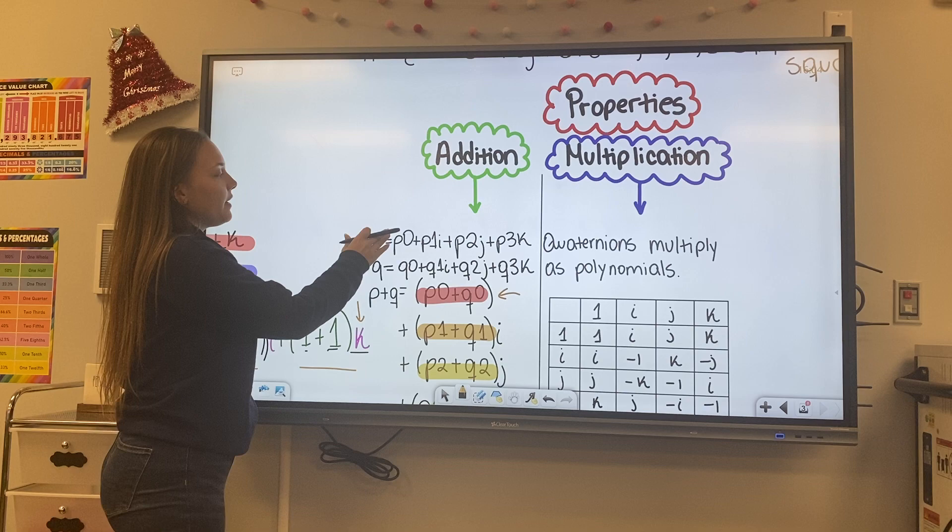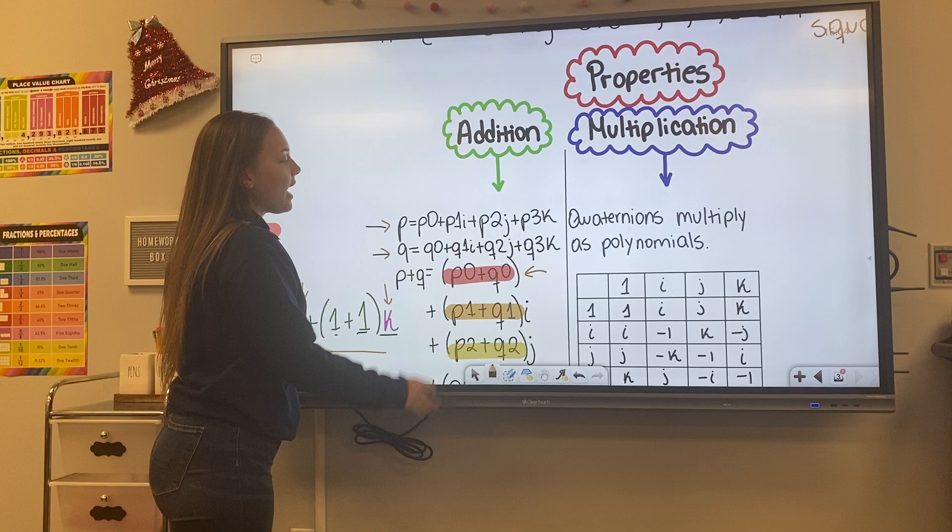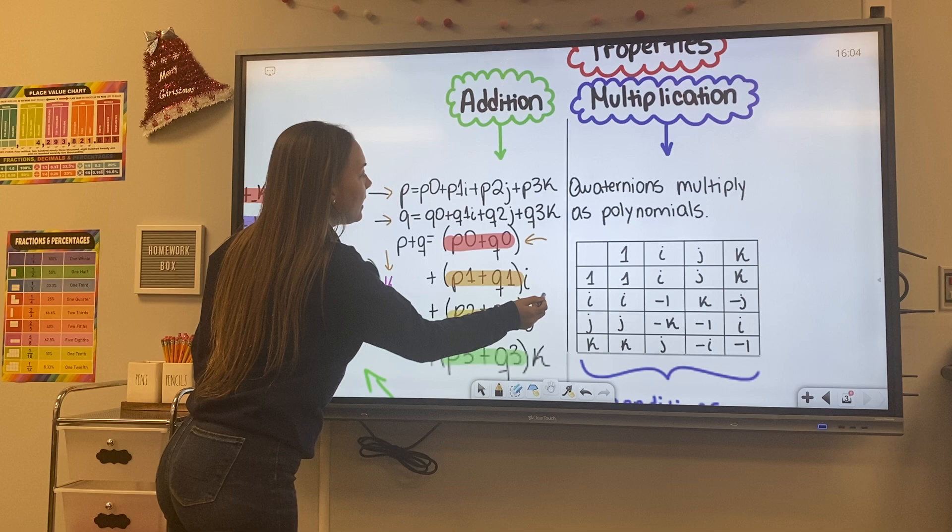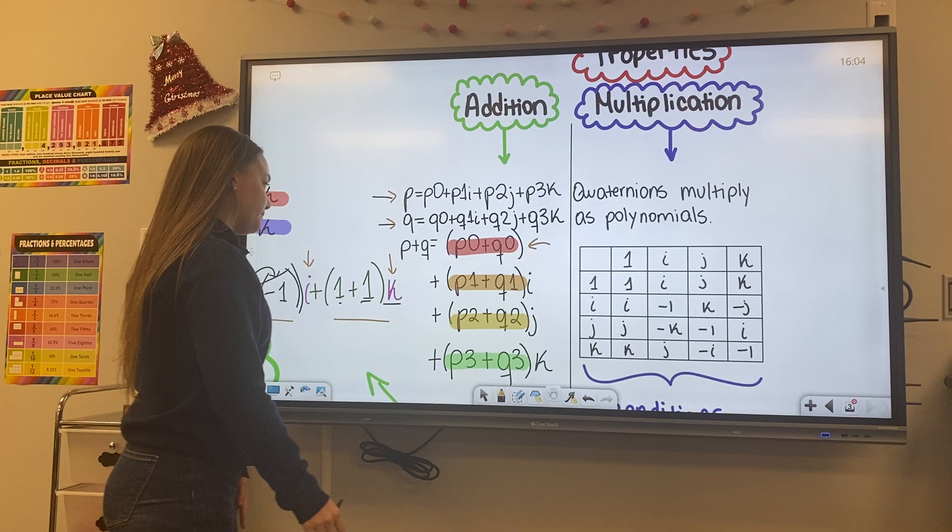So here we have P0 plus P1i plus P2j plus P3k and we have Q0 plus Q1i plus Q2j plus Q3k. So you can see here that we're mainly adding the components and multiplying them by our I, J, and K.